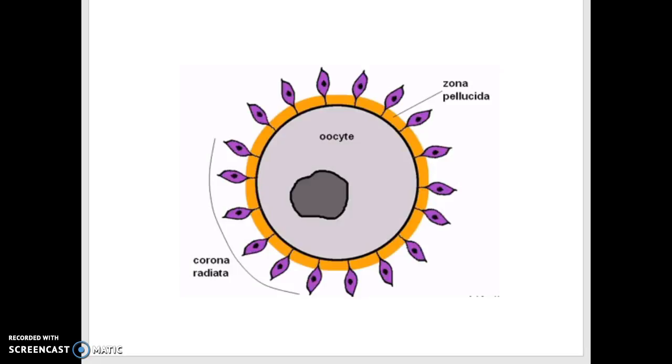The egg has just been ovulated from the ovaries. It is surrounded by a membrane called the zona pellucida and surrounding that is a layer of follicular cells called the corona radiata. The sperm will have to penetrate both of these to fertilize the egg.